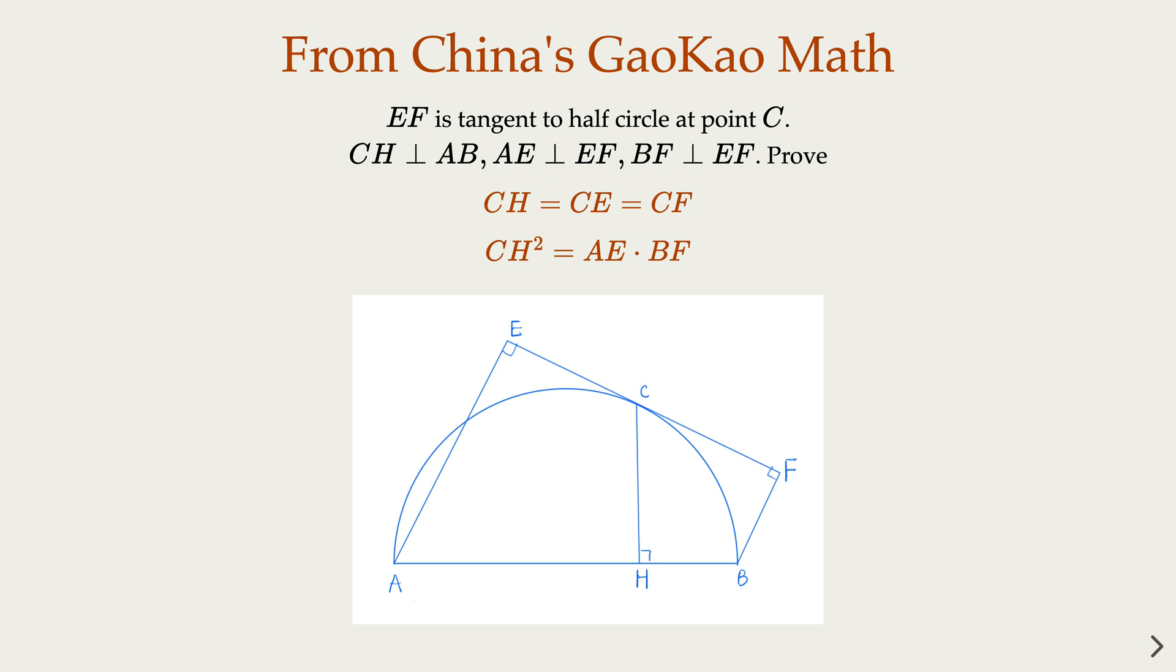We have CH perpendicular to AB. Of course, C is tangent point of line EF to the circle. We also have AE perpendicular to EF, BF perpendicular to EF. We try to prove these two statements here.